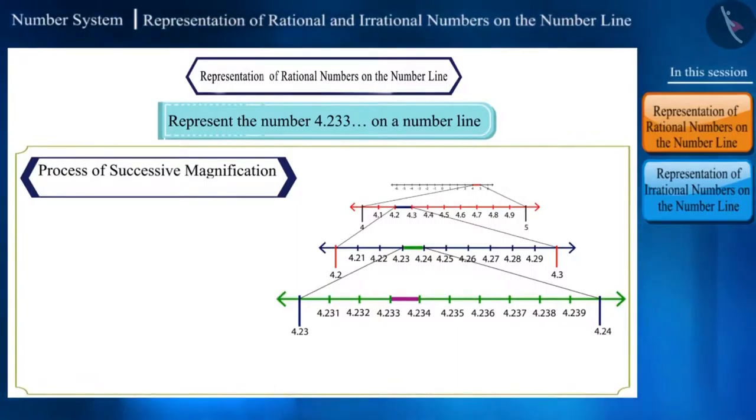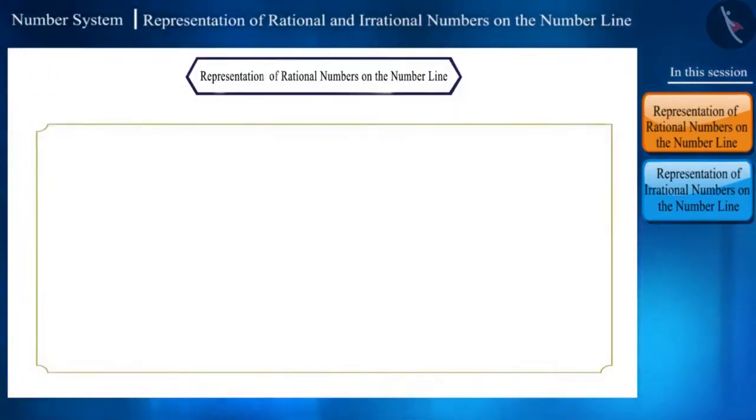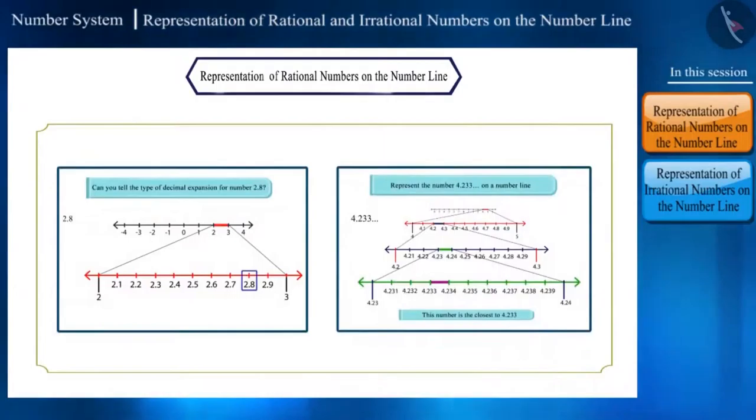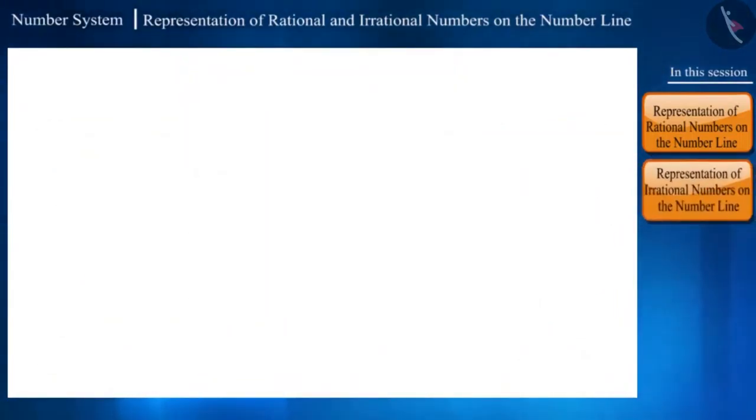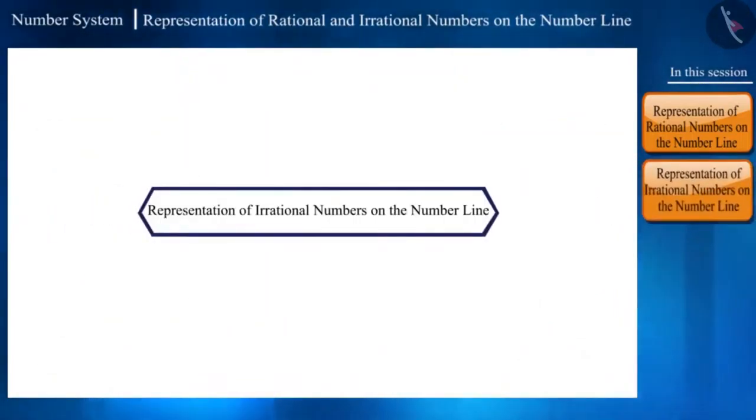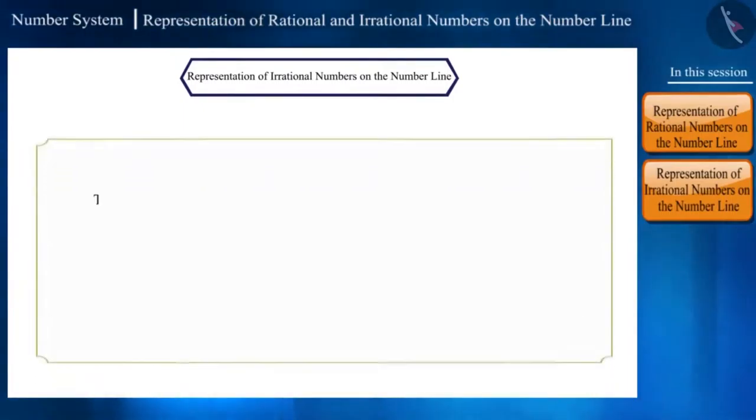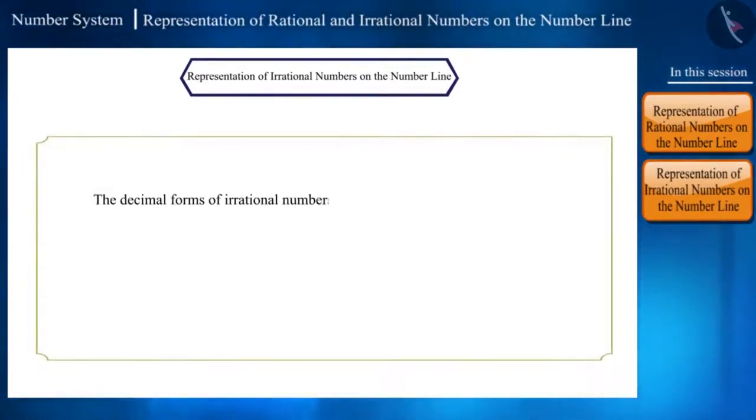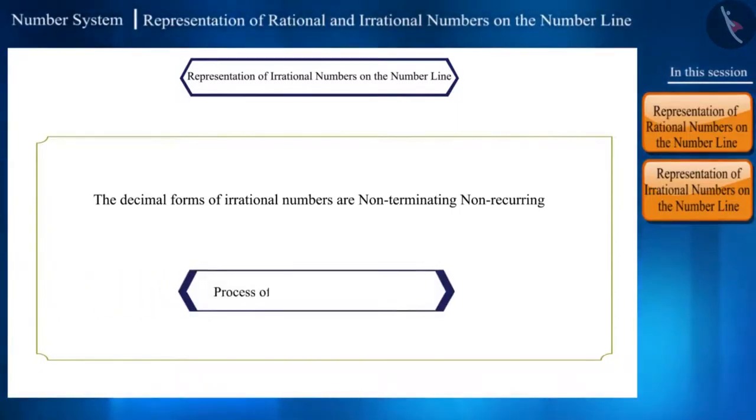Friends, so far we saw how to represent rational numbers on the number line. But can irrational numbers also be represented on the number line? We know that the decimal forms of irrational numbers are non-terminating or non-recurring. So, will we use the same process of successive magnification to represent them on the number line? Yes.